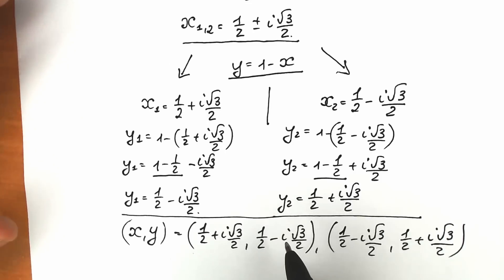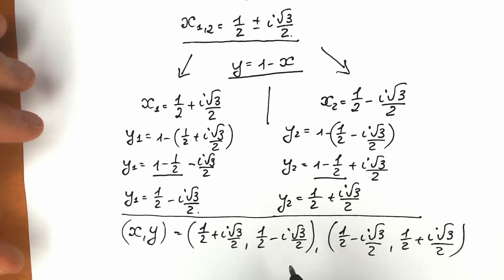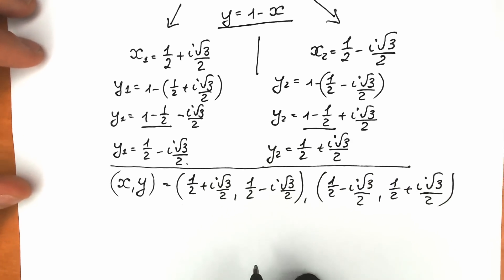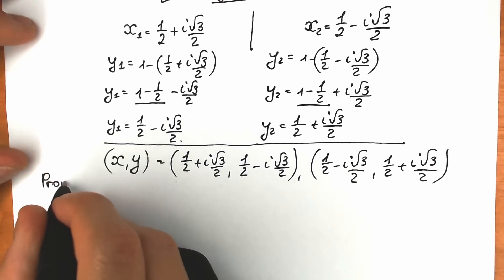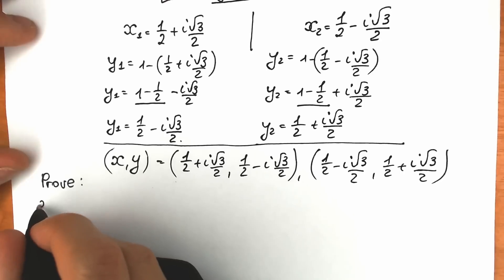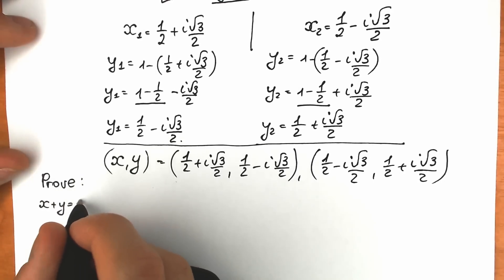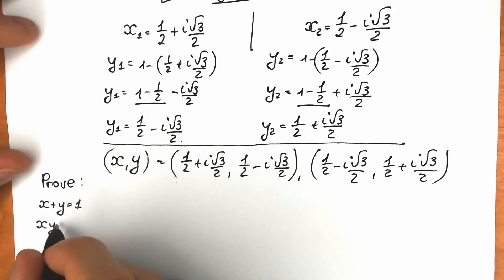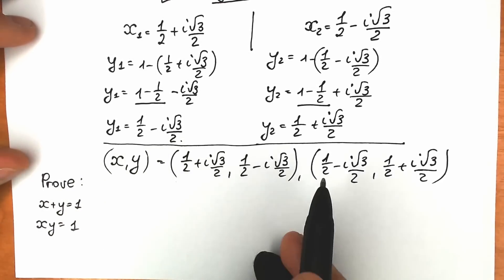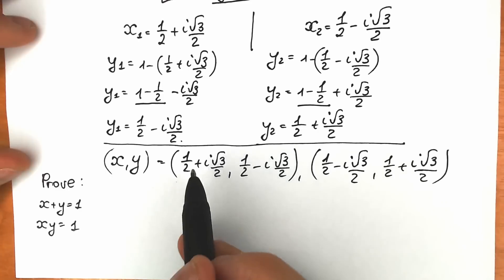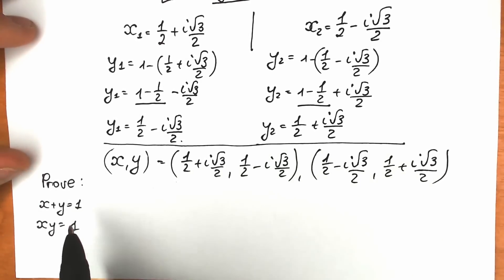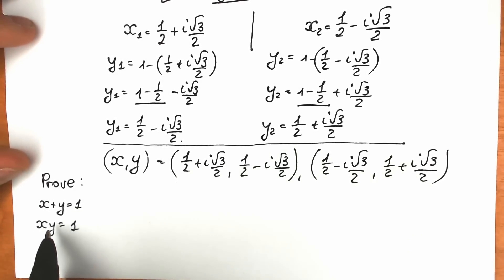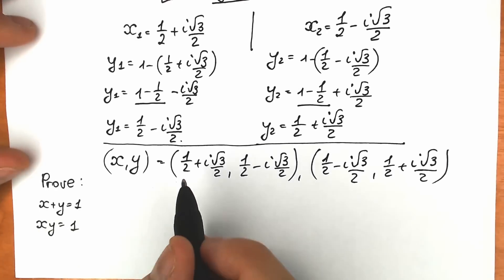A lot of students might not trust this because of the complicated expressions, so let's check and prove it. When we check our roots, note that we don't need to check both pairs because we have addition and multiplication — when we swap positions, it changes nothing. So we only need to check one of these pairs.